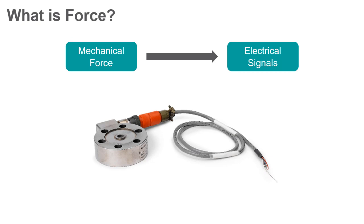As the name implies, strain gauge load cells use an array of strain gauges to measure the deformation of a structural member and convert it into an electrical signal. This configuration is usually a pre-configured bridge.